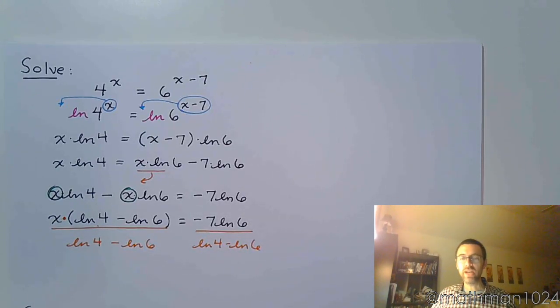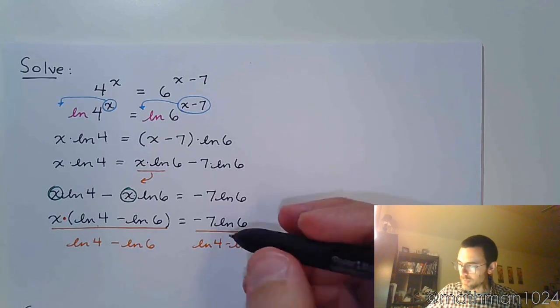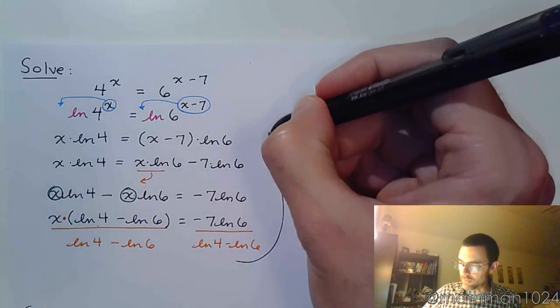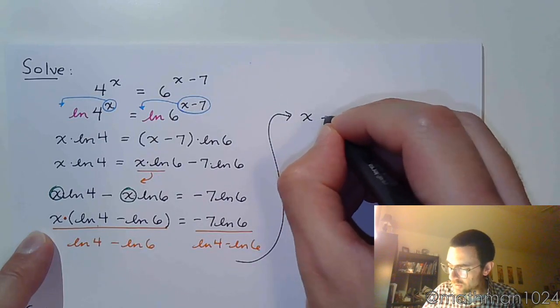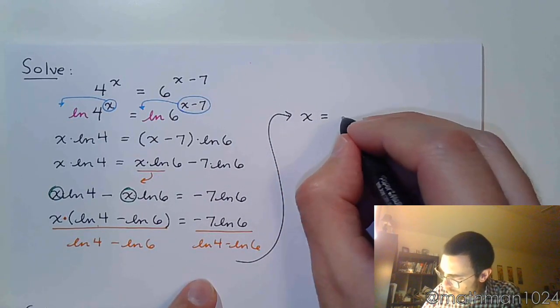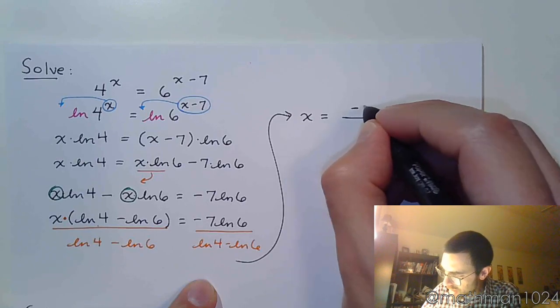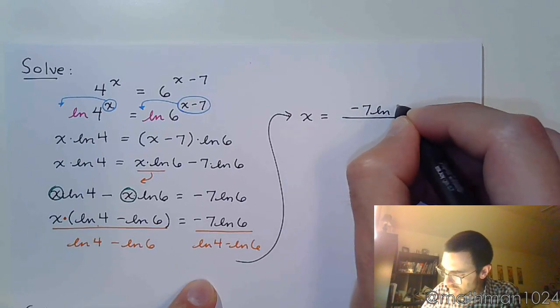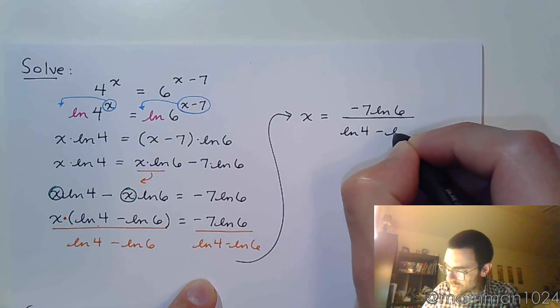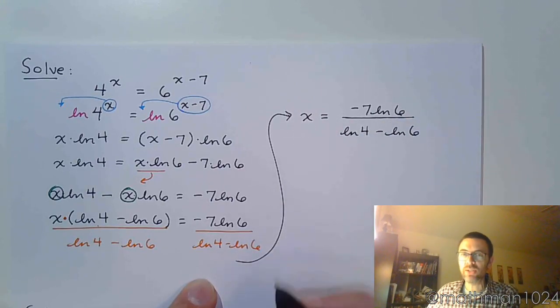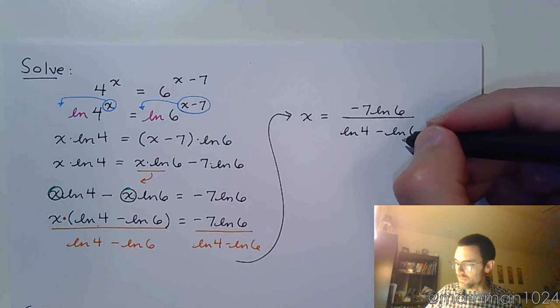And so now we have x totally by itself. So let's rewrite that up here. So x is all that's left on the left side. On the right side, we have a big fraction, -7·ln(6) over ln(4) - ln(6). So this is going to be your exact value.